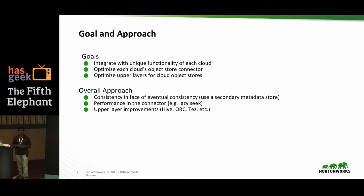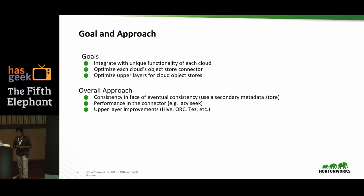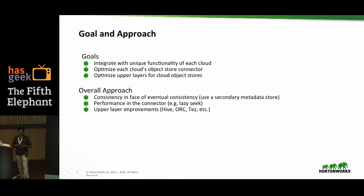The primary goal is to integrate the unique functionalities provided by different cloud vendors into Hadoop itself and to optimize each storage connector. Optimizations should happen not just at the connector level but also at higher levels like Hive, Pig, Spark, MapReduce, and Cascading, so that those frameworks can make better use of the connectors. Performance optimizations at higher levels will be covered in later sections.